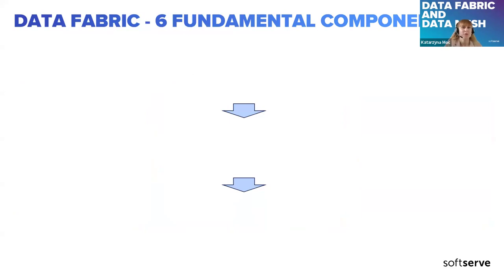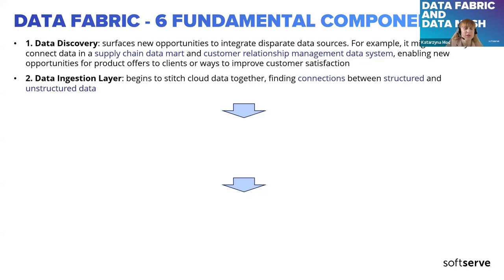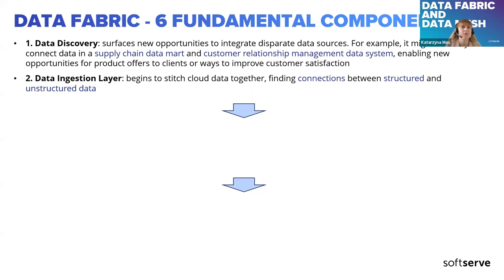There are six fundamental components, which I have divided into three groups. First is data discovery, which surfaces new opportunities to integrate data from disparate data sources. For example, a company might find ways to connect data from a supply chain data mart and a CRM system to enable new product offers or improve customer satisfaction. The second component is the data ingestion layer, where different connections are established between structured, unstructured, and semi-structured data.